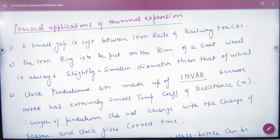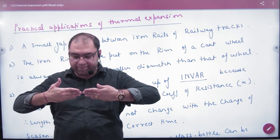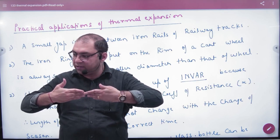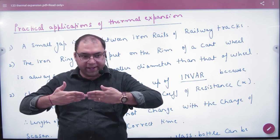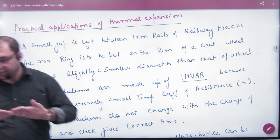And last, practical applications of thermal expansion. The first application is railway lines. Gaps are left between the rails because in heat, if we keep them tight without gaps, the expansion will cause problems. So gaps are left to allow for expansion, and when temperature increases, these gaps are filled by the expanding rails.